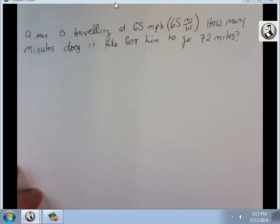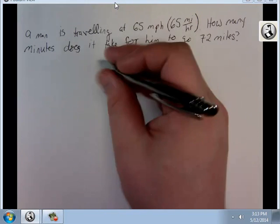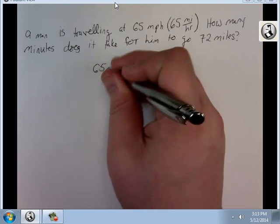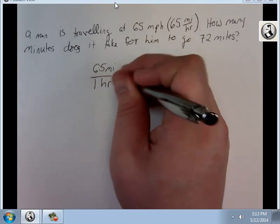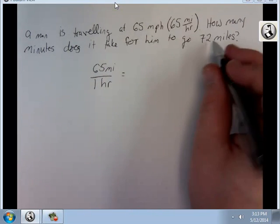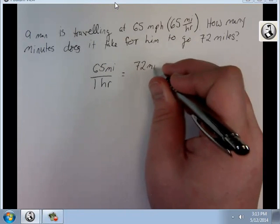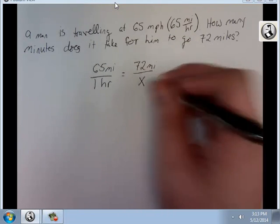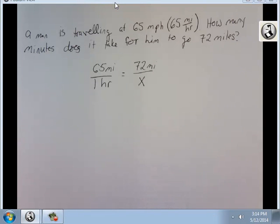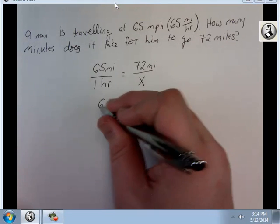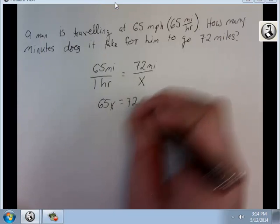How many minutes does it take for him to go 72 miles? Now, there's a lot more going on in this question than you think at first. The first thing we've got to do is find the time that it takes for him to go 72 miles. Well, here's my ratio, 65 miles per hour. And that's going to equal 72 miles over x. I'm going to cross-multiply. 65x equals 72. x equals, so I divide each side by 65.